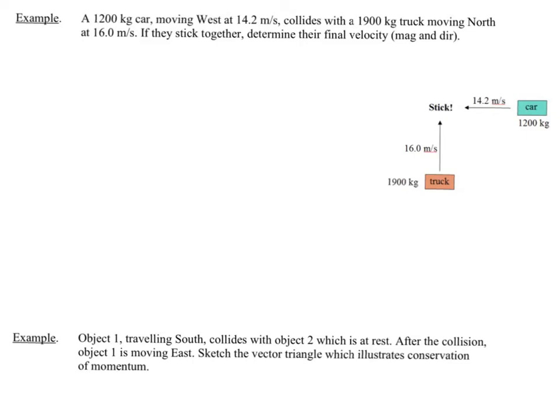All right, so we're going to do our tail to tip method. I'm going to use green for the car because the car seems to be green in this picture. I'm going to just literally add these two vectors together tail to tip. Let's do the truck first. So the truck is coming this way, north, and I can go ahead and work out its momentum. So P of the truck is going to be mv. And if I do that calculation, I get 30400 kilogram meters per second.